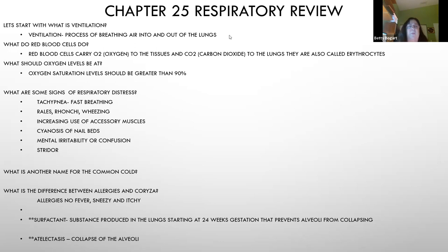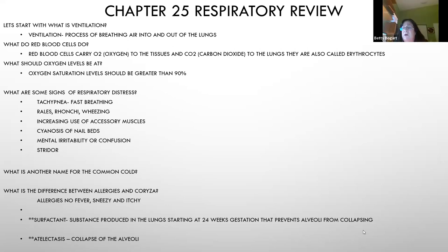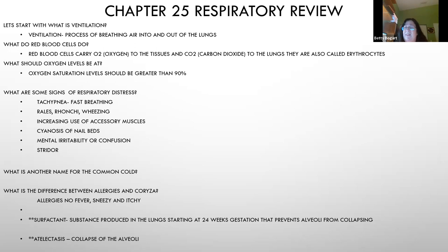Their lungs will sound wet with rales, ronchi, and wheezing. You'll see accessory muscles used, abdominal breathing, intercostal retractions, and nail beds turning blue or cyanotic. Because oxygen isn't high enough, you'll also see confusion and irritability. With children in respiratory distress, stridor — usually inspiratory stridor like in croup — is that sound indicating something is blocking the airway.